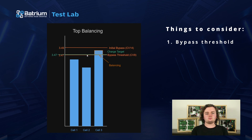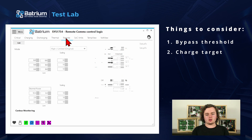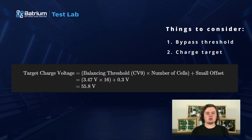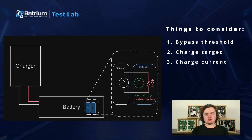The second thing to consider is your charge target. For top balancing it should be slightly higher than or equal to your bypass threshold, and it's found in the remote tab of your software under Control > Remote. You calculate an appropriate voltage target by taking the bypass threshold and multiplying it by the number of cells in series — for example, 16 — and adding a small offset like 0.3 volts. For a 16-cell lithium iron phosphate system, that would be 3.47 V × 16 = 55.5 V plus 0.3 V, giving a target of 55.8 V, which you can see set here.